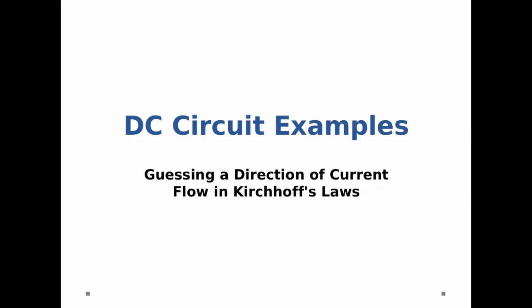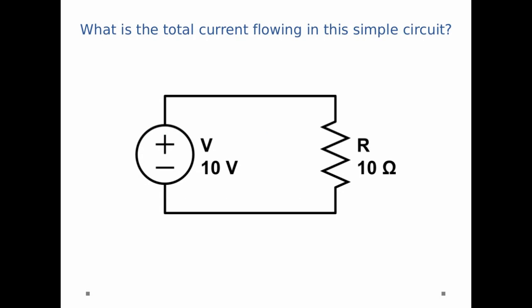We're going to look at an example with DC circuits, and specifically we're going to analyze the direction of current flow when we use Kirchhoff's laws. So I give you a very simple circuit, a battery with voltage V equals 10 volts, a resistor with resistance R is equal to 10 ohms, and I ask, what is the total current flowing in this simple circuit?